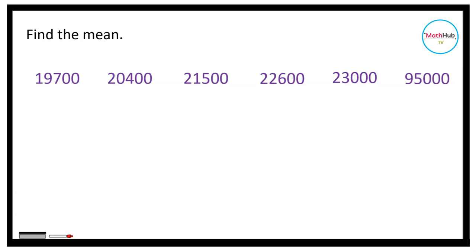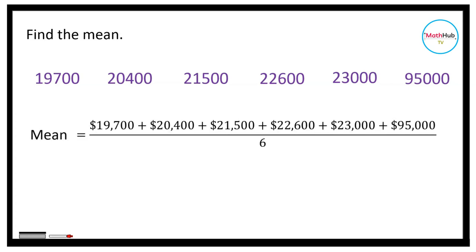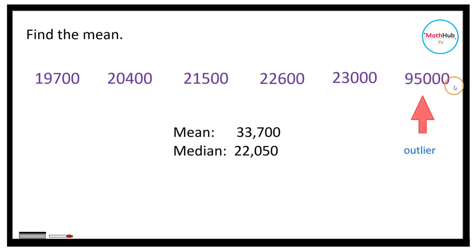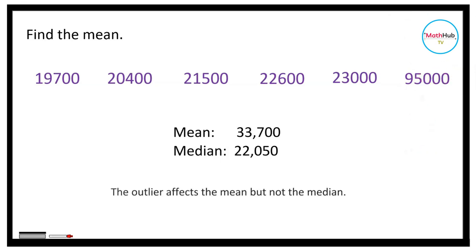Now let's compute the mean annual salary for the six people. Add all six salaries and divide by 6: we get 202,200 divided by 6, which equals $33,700. Comparing the mean to the median, the mean salary is greater because of the outlier — the manager's salary of $95,000 significantly affects the mean, but does not affect the median.